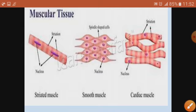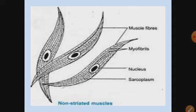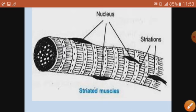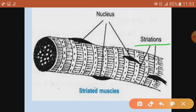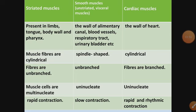Looking at the individual diagrams: the cardiac muscle is cylindrical, multi-nucleated, and branched. These are the smooth muscles or non-striated — spindle shape, having one nucleus, uninucleated, and they don't have striations. This is the striated muscle, and here you can see the striations are present. It is multi-nucleated with striations.